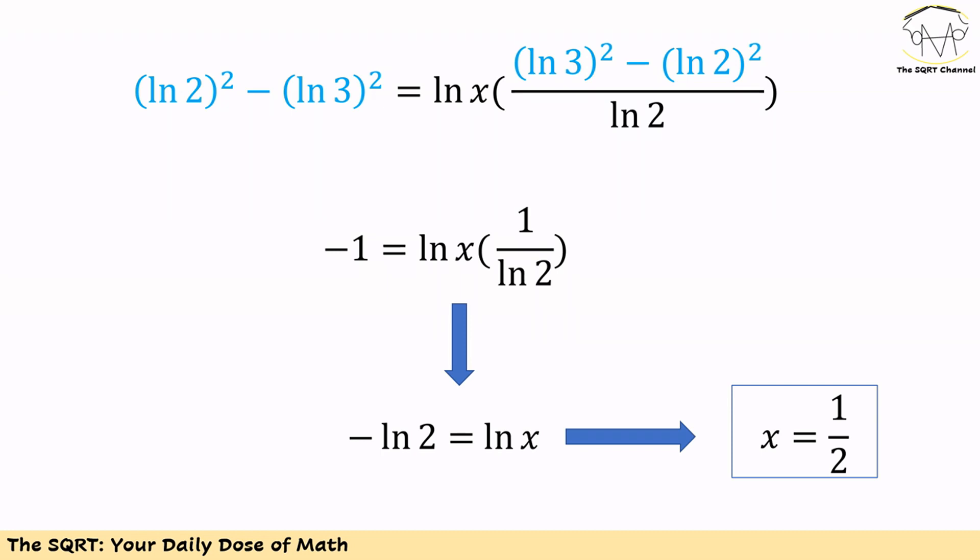We can simplify both sides and then we will have negative 1 equals ln x times 1 over ln 2, and this results in x equals 1 over 2. That's our final answer.